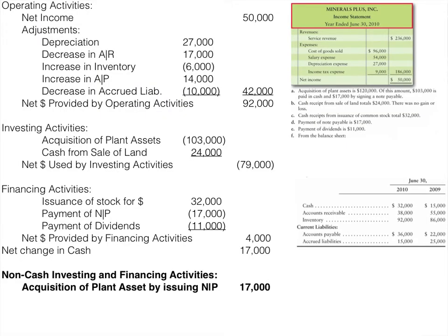We're back with the completed statement of cash flows. In the operating activity section, we start with net income, then adjust by analyzing current assets, current liabilities, depreciation, and gains and losses. Starting with depreciation from the income statement — depreciation is a non-cash expense, so it must be added back.